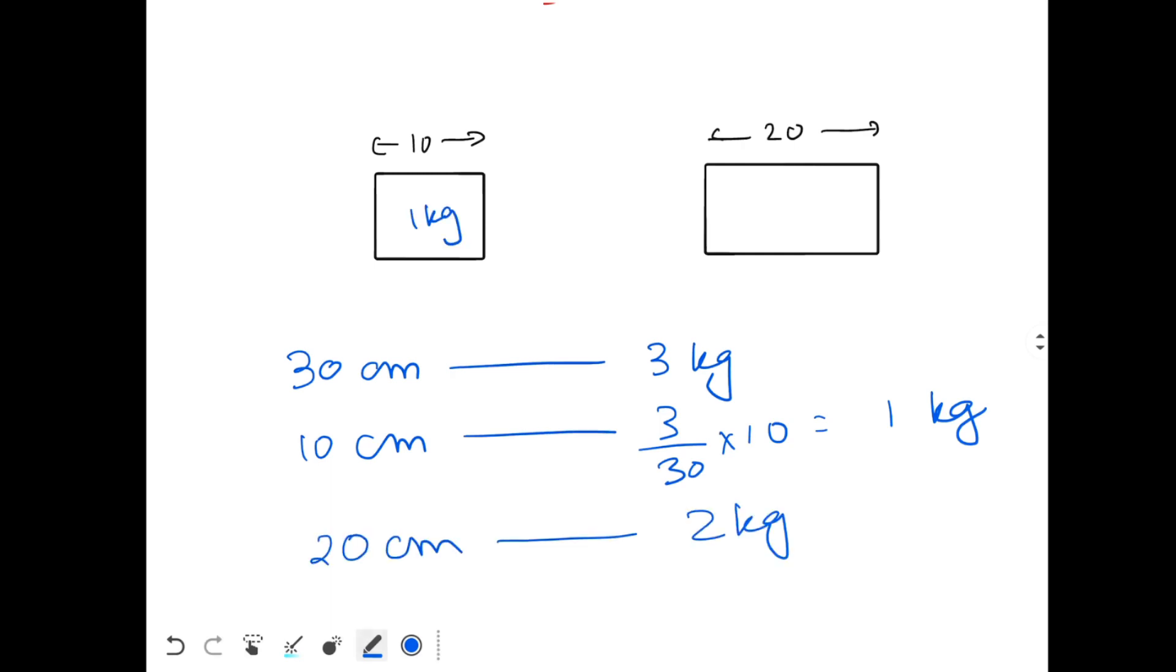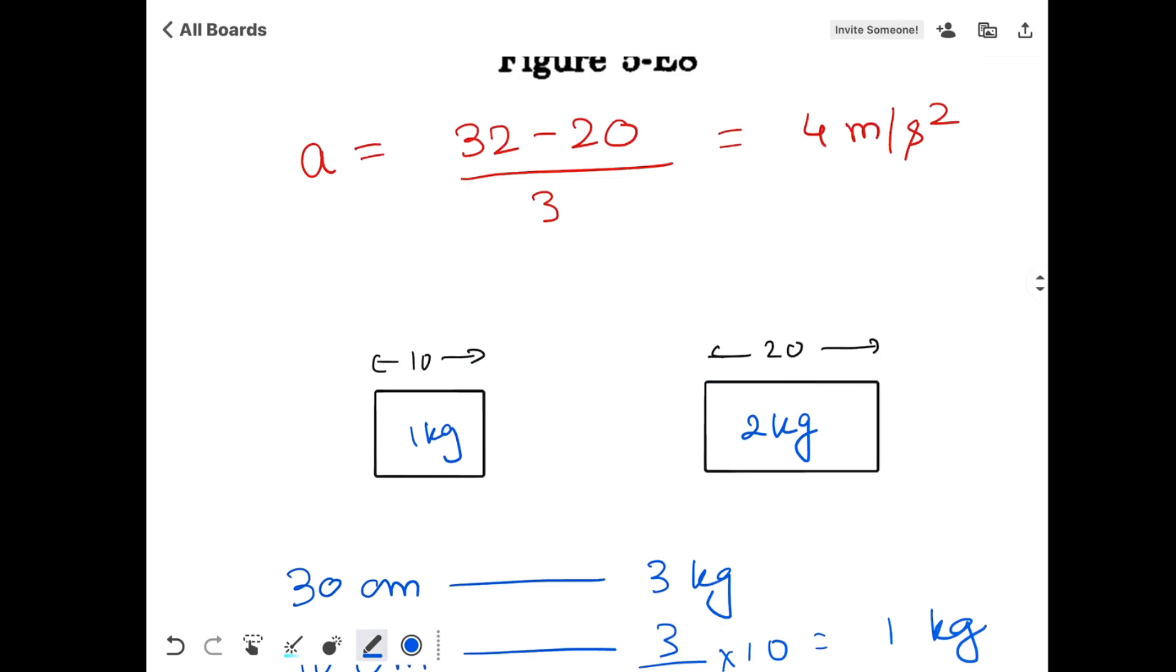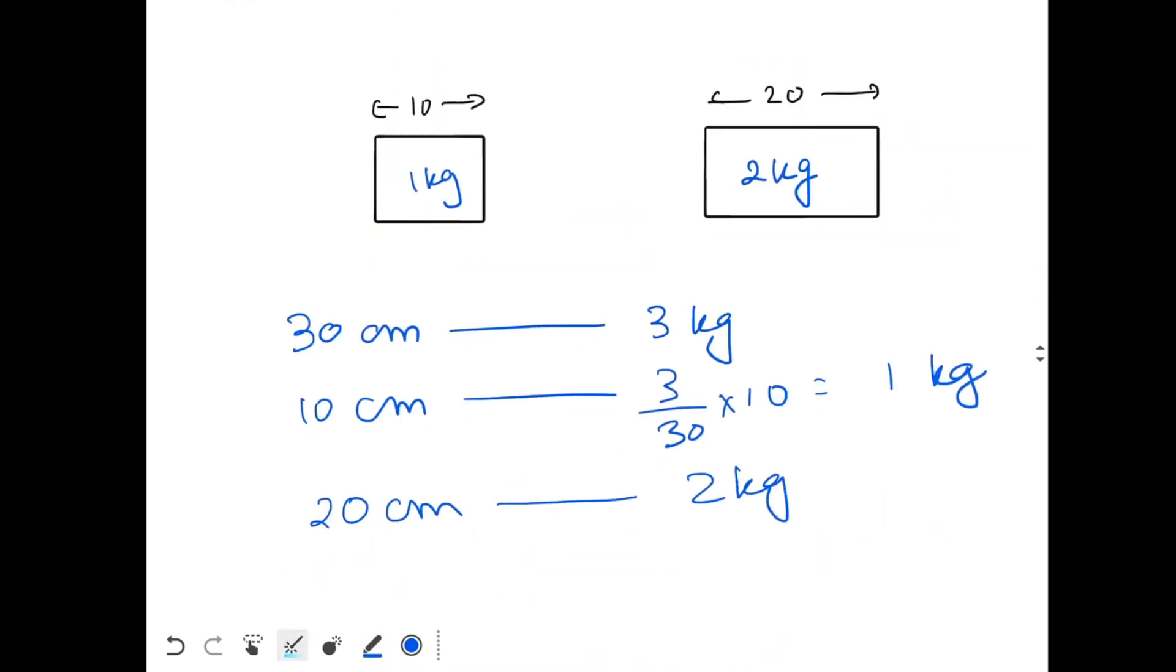So this is 1 kg, this is 2 kg. Let's draw the forces again. Here we have 32, here we have 20. This will be 32 N force over here, and here we will get 20 N force. The two blocks are applying tension on each other. This is tension T, this is tension T again. We have to find the value of T.